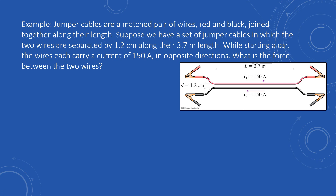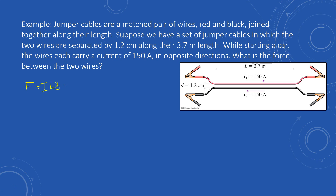We just learned about the force between two wires. We know that force on a wire is given by our equation F = ILB sine theta. Looking at this equation, we do know that the current is 150 amps, and we do know the length of the wires. But we don't necessarily know the strength of the magnetic field right now, so that's an important issue.